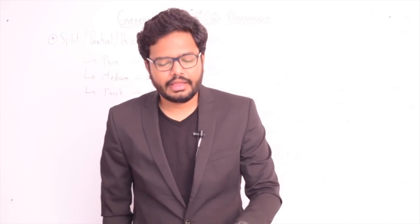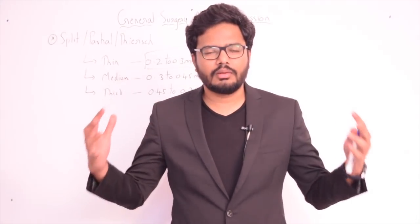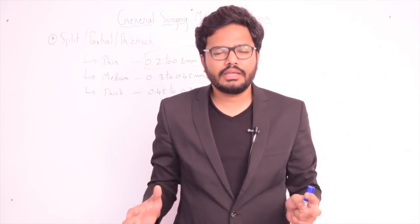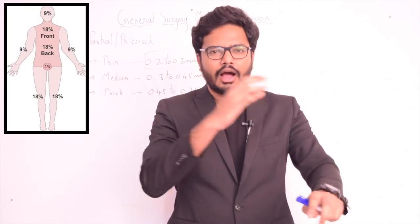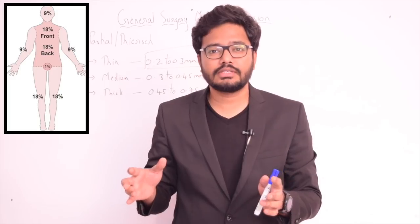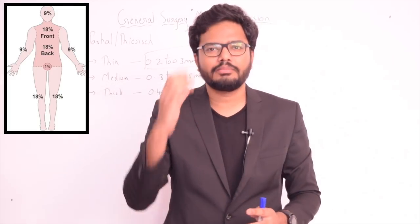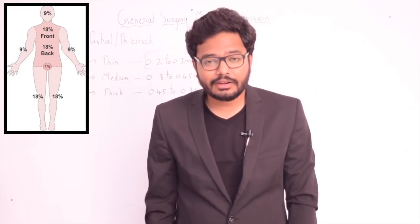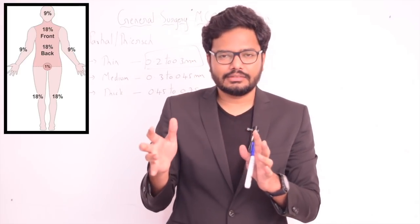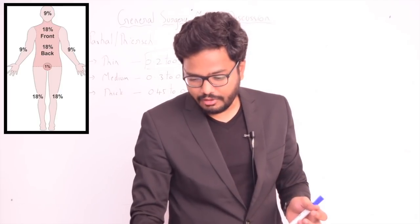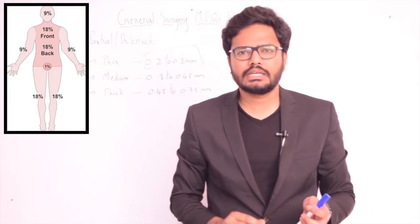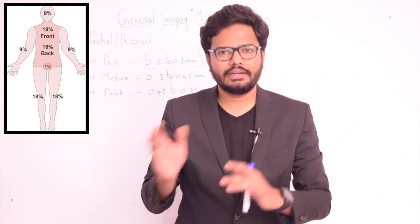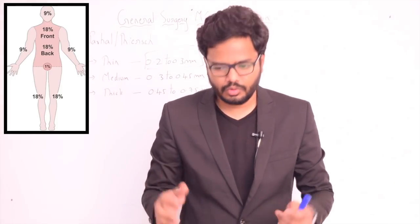In adults, total body surface area is divided as follows: head and neck constitute 9%, each upper extremity 9%, anterior trunk 18%, posterior trunk 18%, each lower extremity 18%, and perineum/genitalia 1%. So the rule of nines applies to adults in this distribution.